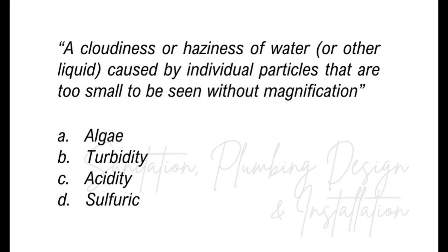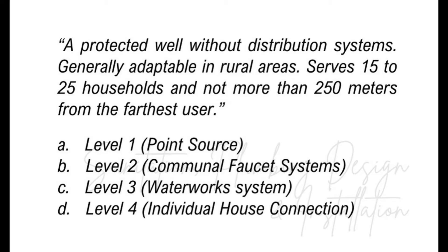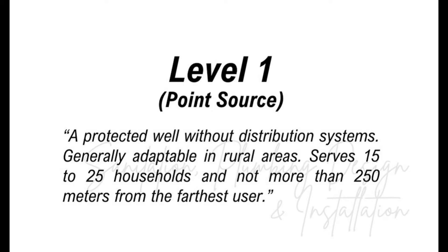It is a cloudiness or haziness of water or other liquid caused by individual particles that are too small to be seen without magnification — A, algae; B, turbidity; C, acidity; D, sulfuric? The answer is turbidity. It is a protected well without distribution systems, generally adaptable in rural areas. Serves 15 to 25 households and not more than 250 meters from the farthest user — A, level 1 or point source; B, level 2 or communal faucet systems; C, level 3 or waterworks system; D, level 4 or individual house connection? The answer is level 1 or point source.